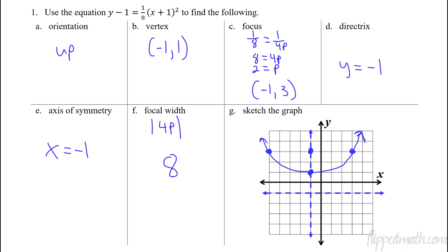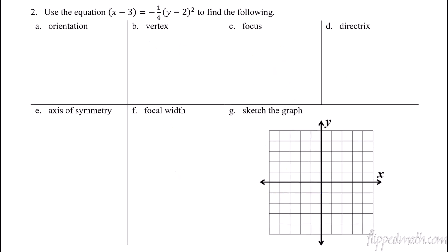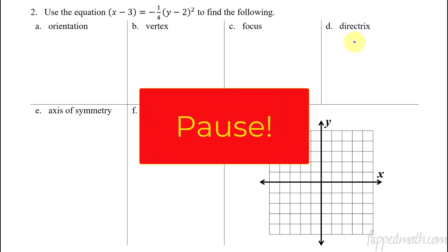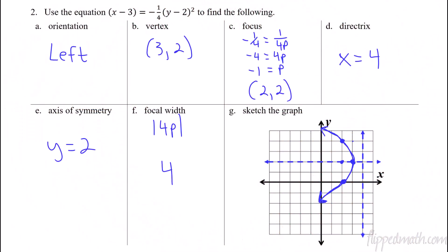So with all that information from the first example, I'm going to have you pause the video now. Try to do this whole thing on your own just like we did the last problem, and then you can double-check your answers here. This is a parabola opening up to the left — the tricky part is making sure you get the correct p value, which will then help you find the directrix, axis of symmetry, focal width, and all that.